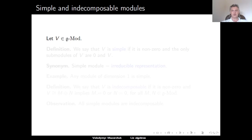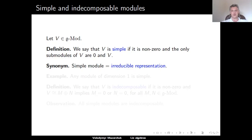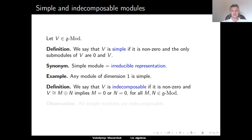Let's talk about various types of modules. The usual notion of a simple module: a g-module v is simple if it is non-zero and the only submodules of v are zero and v itself. We already noted that any module always has those two submodules, so a module is simple if there is nothing else. In representation language, one usually says irreducible representation — the notion of a simple module is a synonym for irreducible representation. An easy example: any module of dimension one is simple because it has no subspaces different from zero and v, let alone submodules.